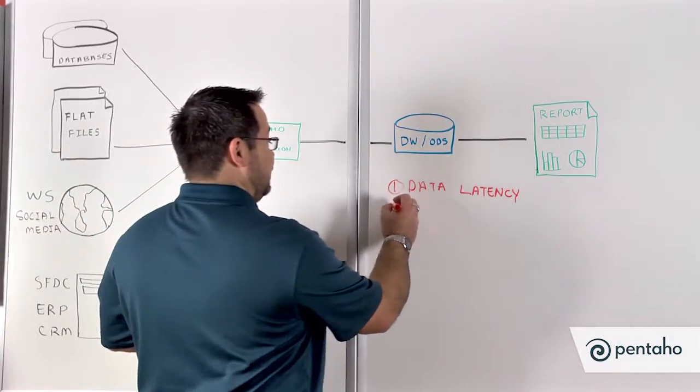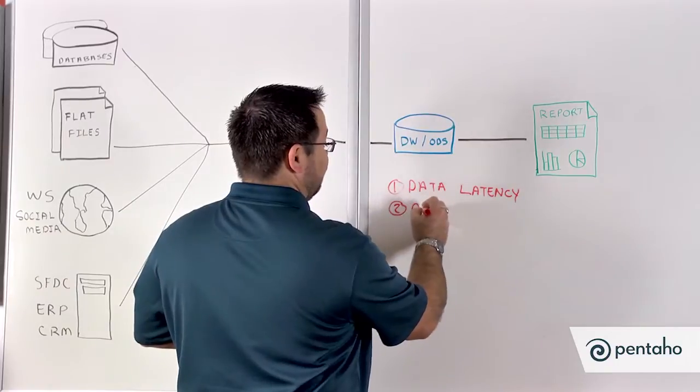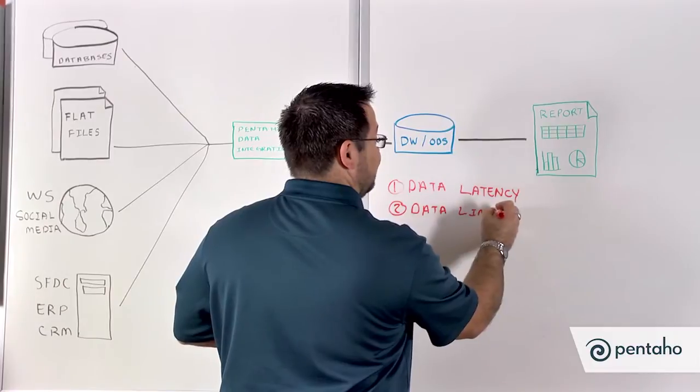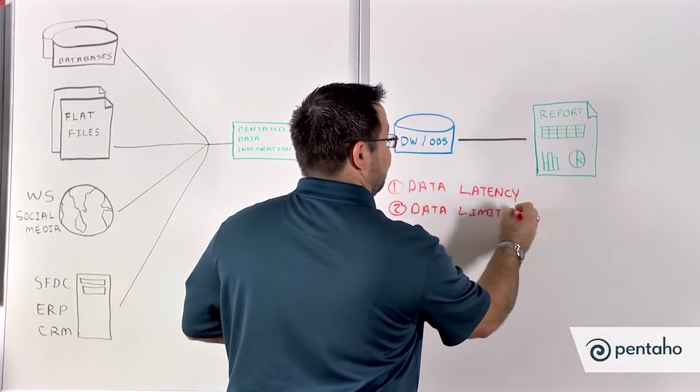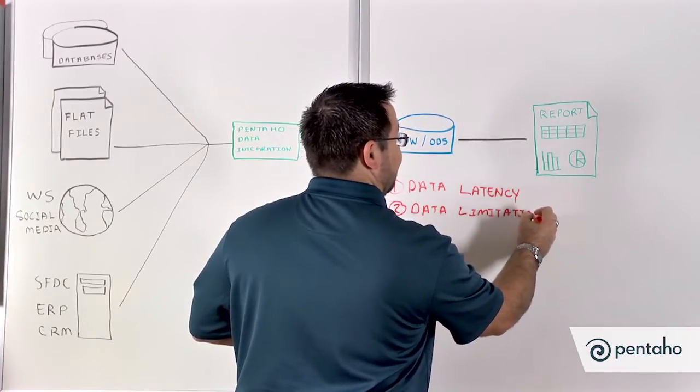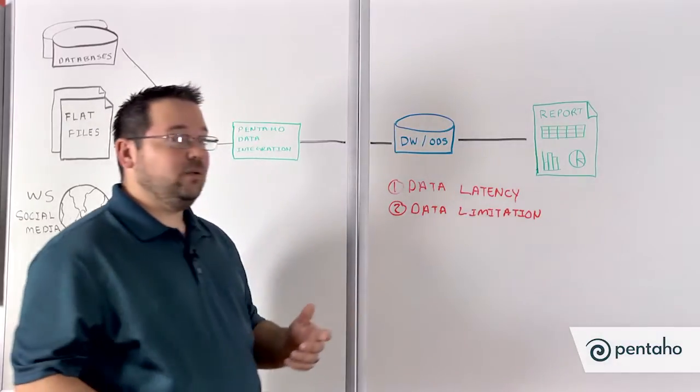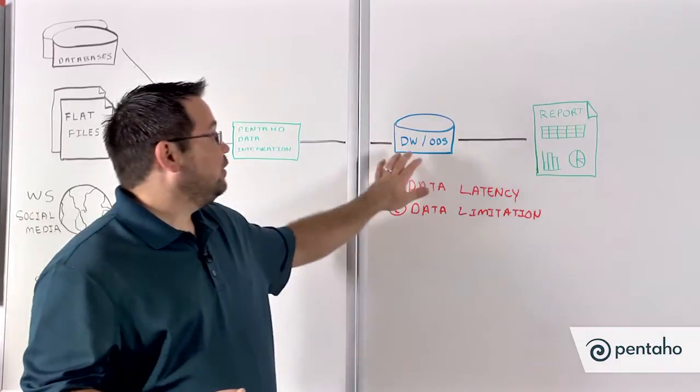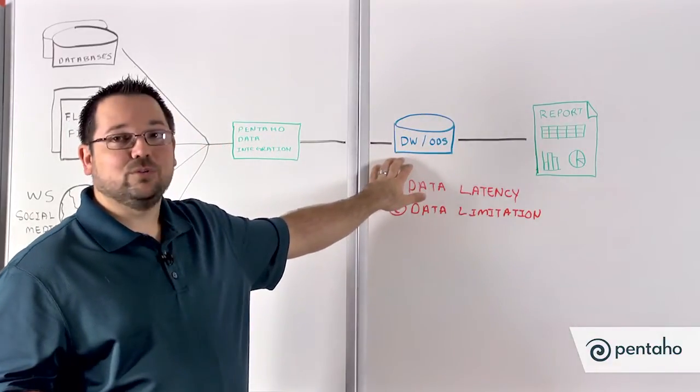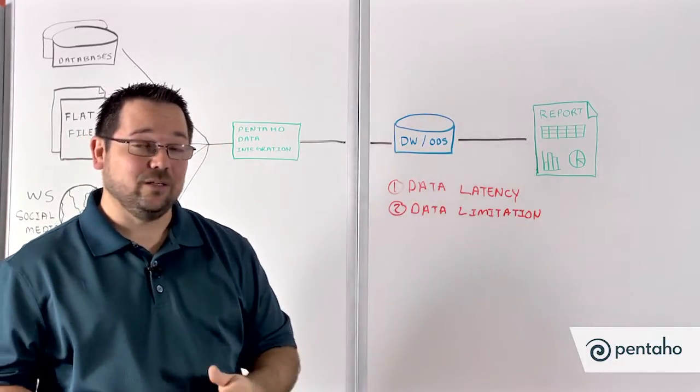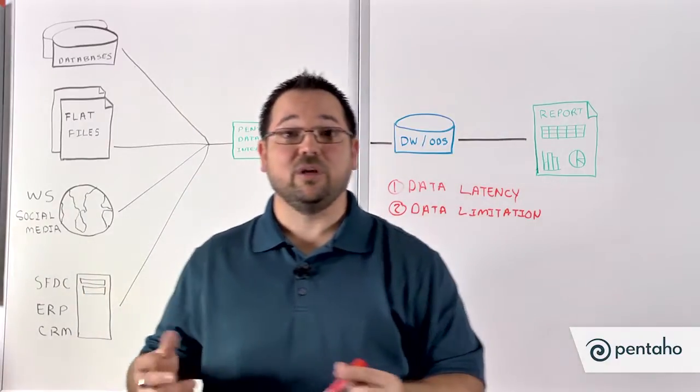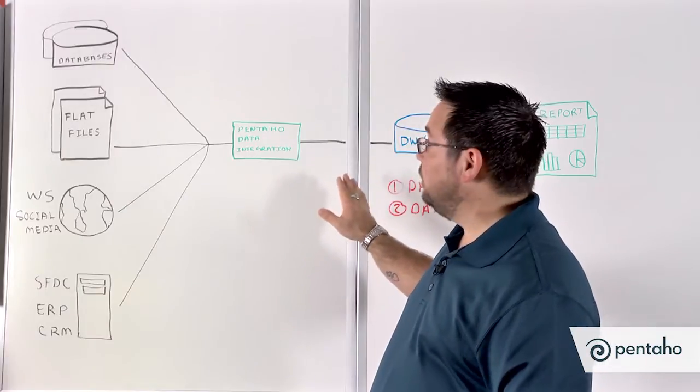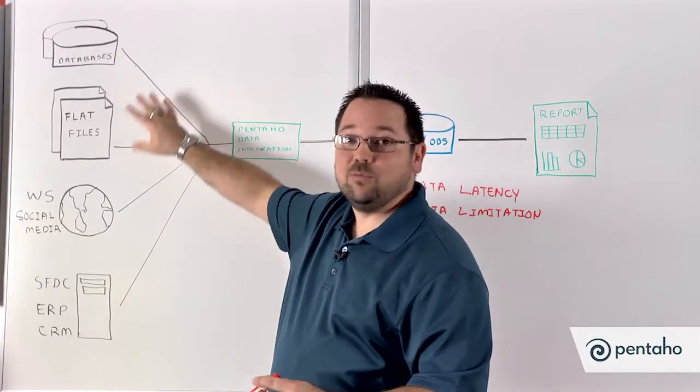The second problem is data limitation. What do I mean by data limitation? What I mean is that you're limited to the amount of data you can get. For example, there may be a particular field that you want to be able to report off of. And that field, at the time the data warehouse was created, wasn't deemed as necessary. But as your business evolves and changes and you start to look at different metrics, you realize that metric is very important, and it may reside in one of these data sources.